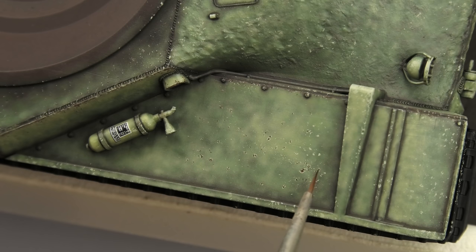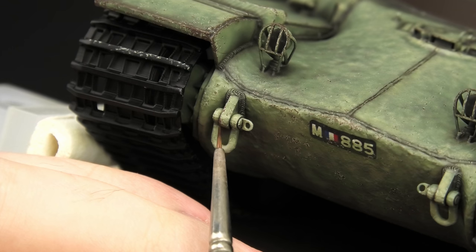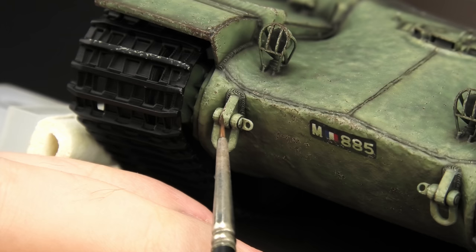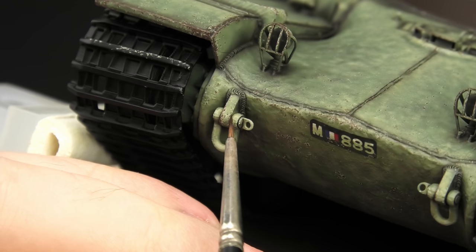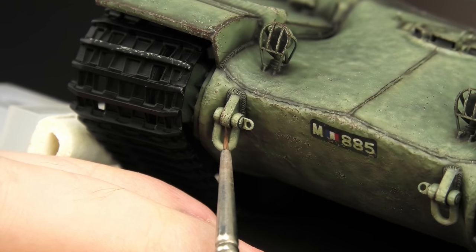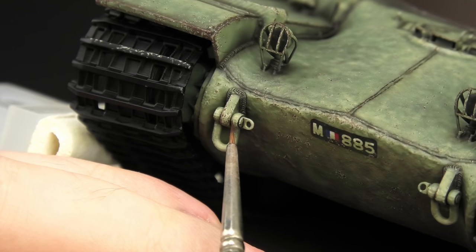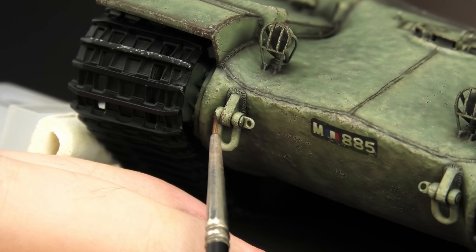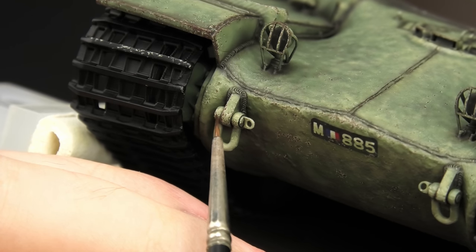In the past I preferred dark grey color for this effect because it works really well with rust washes, but dark rust is a very universal color. It just looks good and it works with any type of surface, be it Panzer Grey, Oxide Primer, Dark Yellow, Olive Drab, you name it.